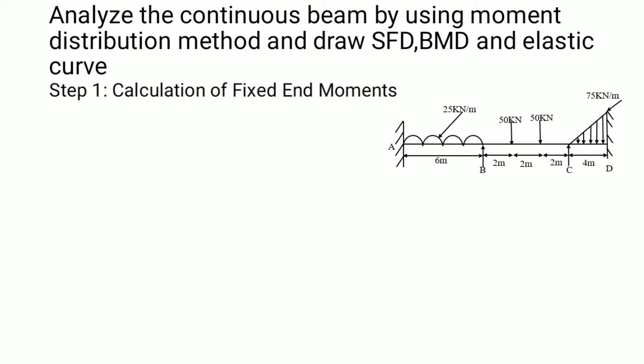You can observe a sketch of a continuous beam here, where A, B, C, and D are the supports. Span AB is six meters in length and subjected to a uniformly distributed load of 25 kN/m. Span BC is six meters total — divided into three equal segments of two meters each — and subjected to two point loads. Span CD has a length of four meters and is subjected to a uniformly varying load of 75 kN/m at D and zero at C.